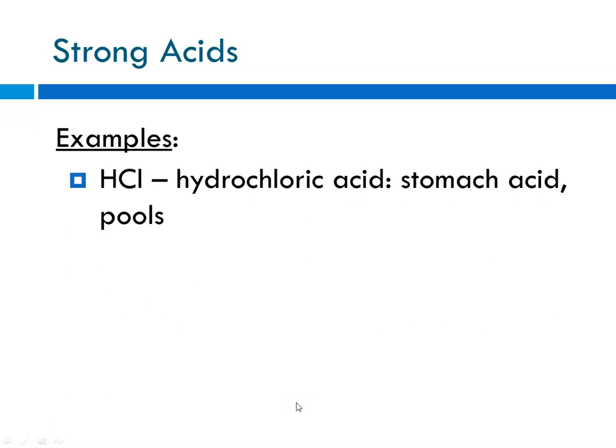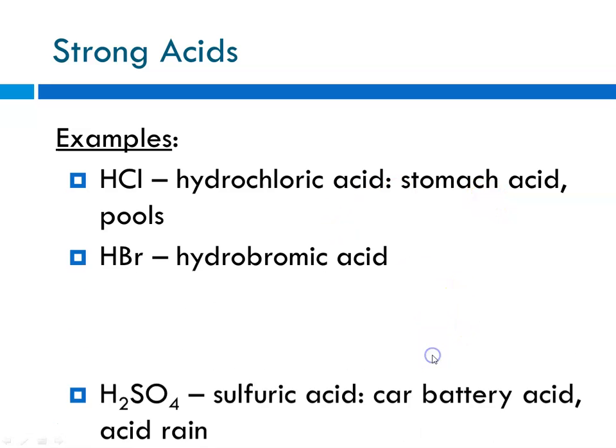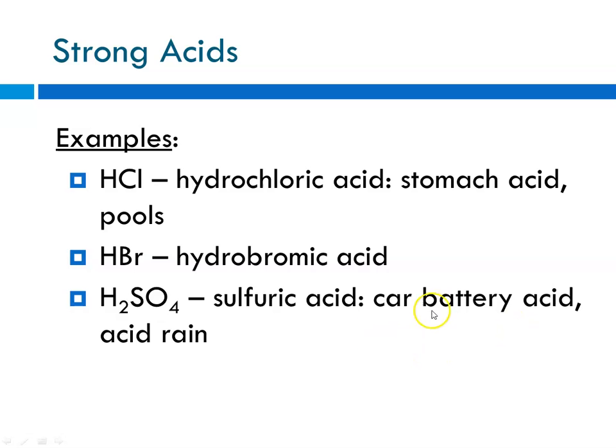Some examples of strong acids: hydrochloric acid, stomach acid, which is stomach acid and is also used in pools, hydrobromic acid, and sulfuric acid, which is car battery acid and one of the components of acid rain. And, there is a picture of hydrogen chloride, or, if it's aqueous, hydrochloric acid.